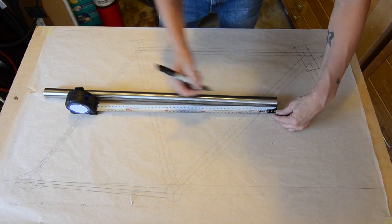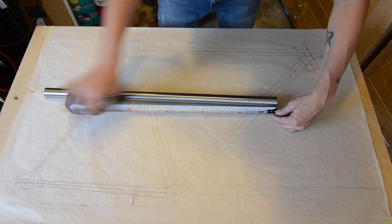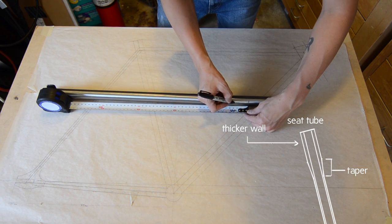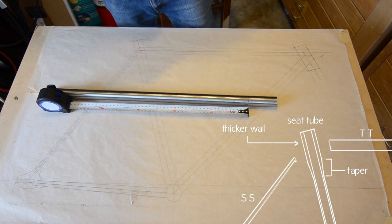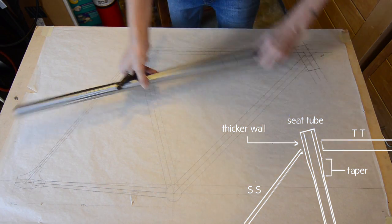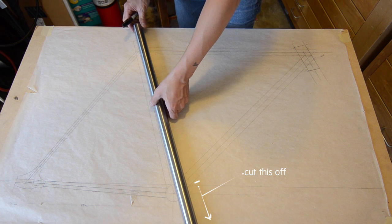Alright now I'm marking where the tube is butted and where it tapers. I'm doing this because I need the chain stays welded to the seat tube where the wall is thickest. So now with it marked, I can see how much I need to cut off at the bottom.